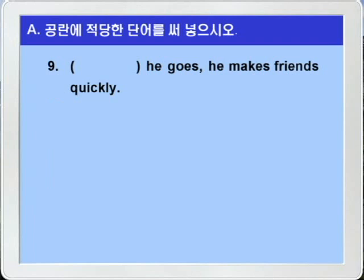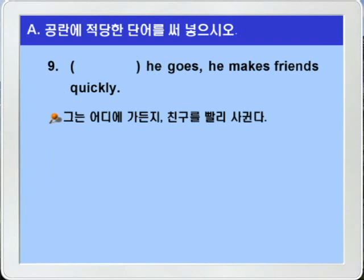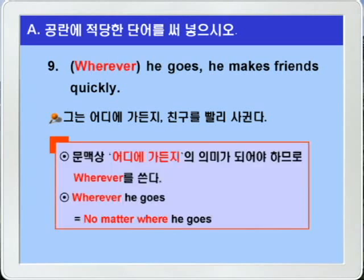9번입니다. 문맥에 맞게 해석을 해보죠. 'blank he goes, he makes friends quickly' — make friends는 친구를 사귀다 이런 말이니까 그는 친구를 빨리 사귄다 이런 의미의 문장입니다. 따라서 no matter where의 의미를 가지는 복합관계부사 wherever가 정답이 되겠습니다. 'wherever he goes'는 'no matter where he goes' 즉, 설사 그가 어디에 가더라도 이런 의미의 양보의 부사절이죠.